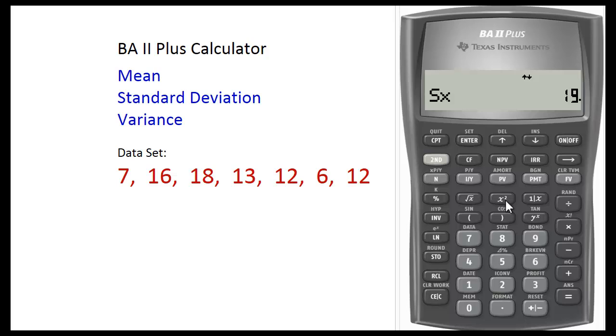And that's how you obtain mean, standard deviation, and variance using the BA2 Plus calculator. To clear your work, press 2nd data, press 2nd clear work, and press 2nd quit. Now you're in regular calculator mode again. Thank you for watching. Bye for now.